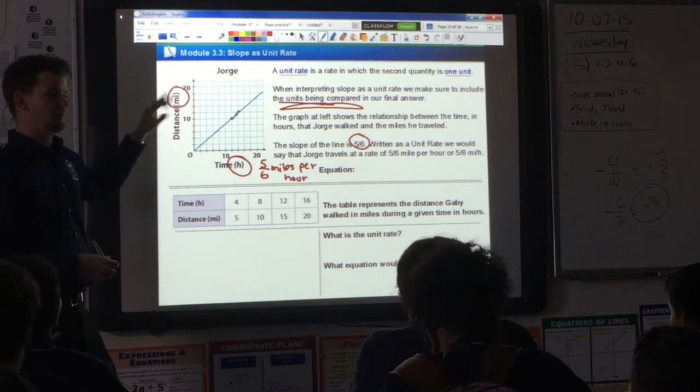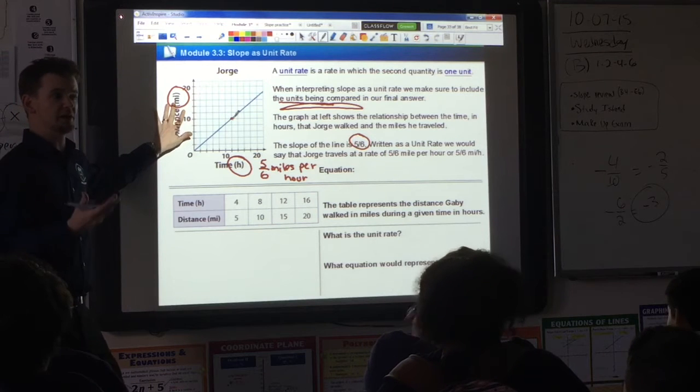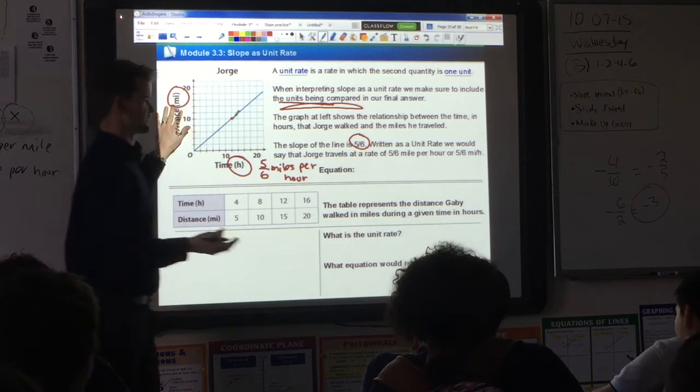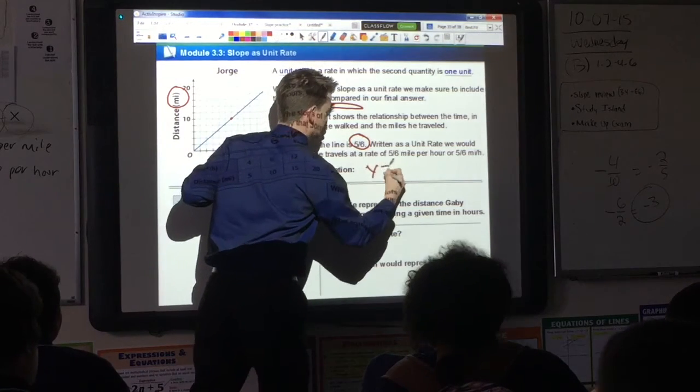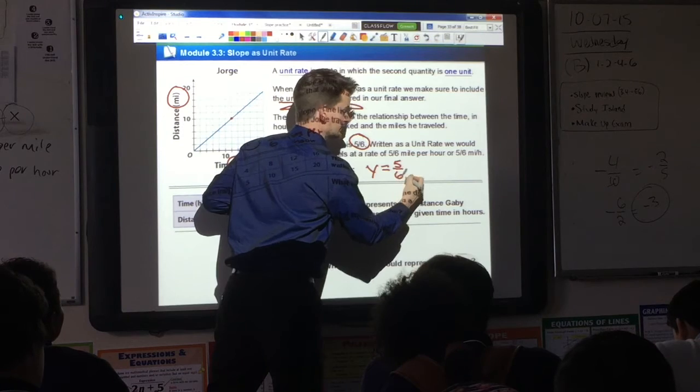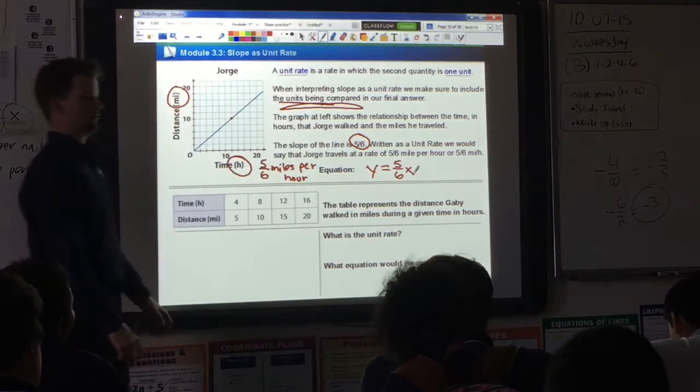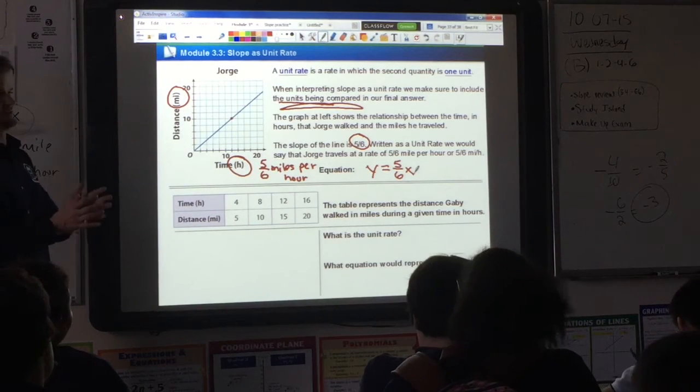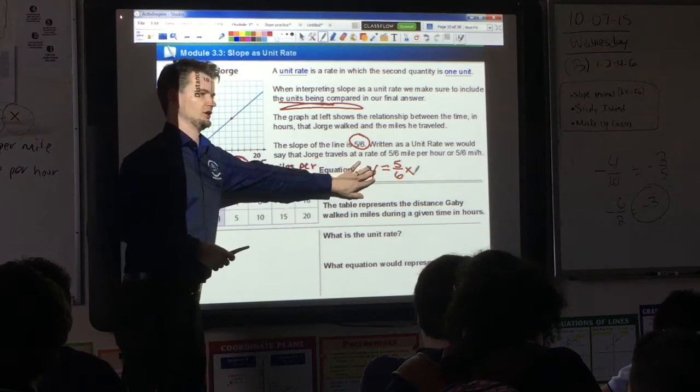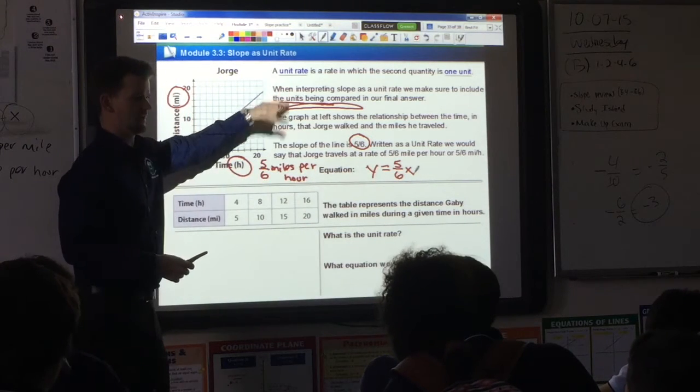What's my slope here? 5/6. The equation for this would simply be y equals 5 over 6 x. That would be my equation. You're going to see next time how, given an equation, we can then graph this line. But that's next time. Let's try another scenario here.